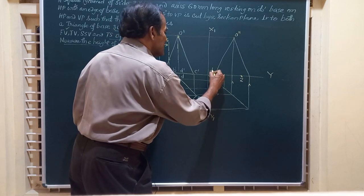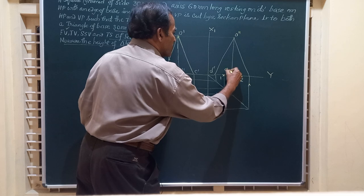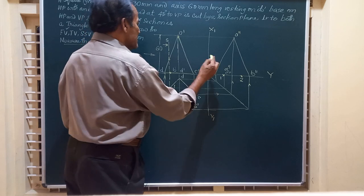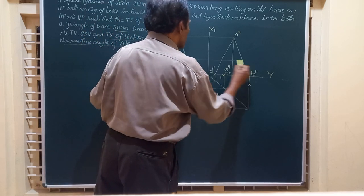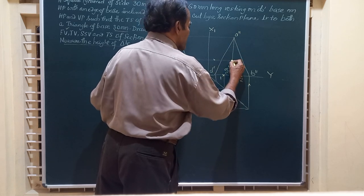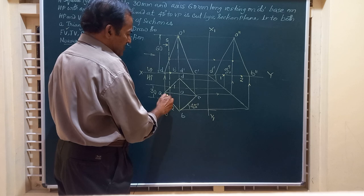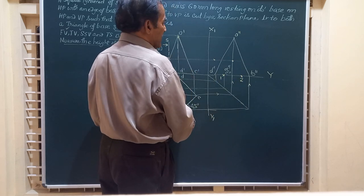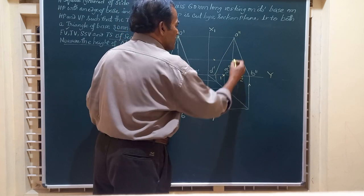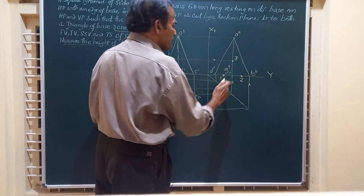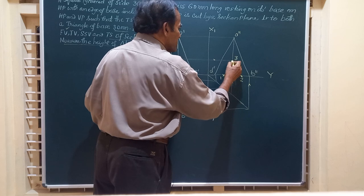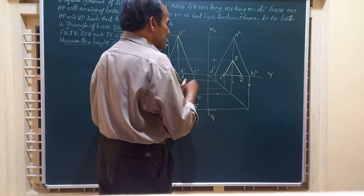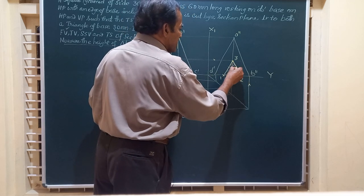The slant edge O'D' is cut here, giving point D'' in the end view. A''C'' is another point in the end view, and B'' is also located. Draw a horizontal line through that so as to cut the slant edge OA at point 3. This point is projected here onto edge OA. So we now have three points to join.